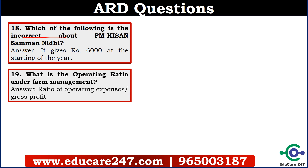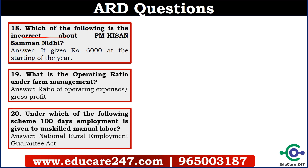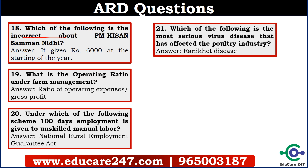The nineteenth question is: what is the operating ratio under farm management? The answer is the ratio of operating expenses divided by gross profit. The twentieth question is: under which of the following scheme is 100 days of employment given to unskilled manual labor? It is talking about MGNREGA — the National Rural Employment Guarantee Act.